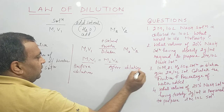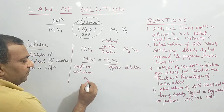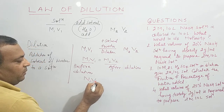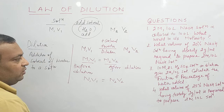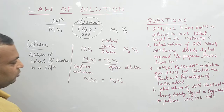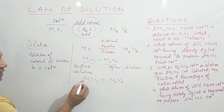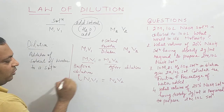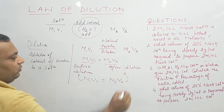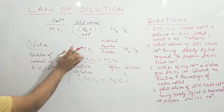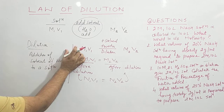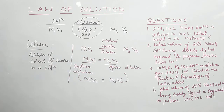Similarly, we can apply the same law in the case of normality: N1V1 = N2V2, where N1 and V1 are normality and volume before dilution, and N2 and V2 are normality and volume after dilution. So these are the two formulas for the Law of Dilution.